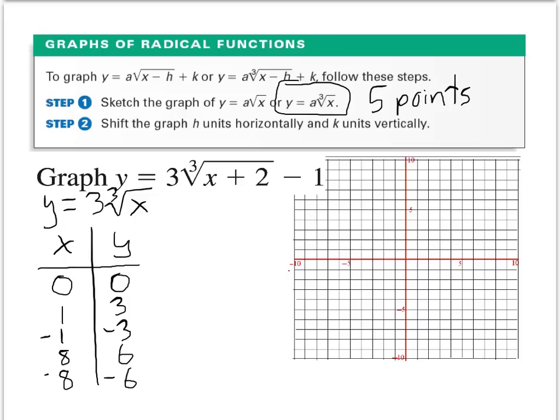I want to graph these points: (0, 0), (1, 3), (−1, −3), then over 8 and up 6 for the point (8, 6), and to the left 8 and down 6 for (−8, −6).